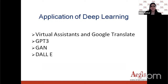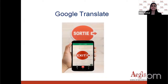Let's take a look at a few applications of deep learning. Virtual assistants that we've been using, Google Translate, GPT-3 — a language model based on transformers and very deep neural networks — GAN, and I'd also like to talk about DALL-E, which is the latest application in this field of deep learning. Let's understand each of these applications in detail.